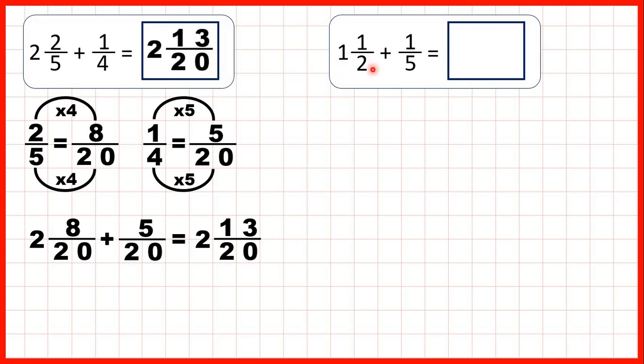Now we have 1 and a half plus 1 fifth. So the lowest common multiple of 2 and 5 is 10, so we can find equivalent fractions to a half and a fifth which both have a denominator of 10.